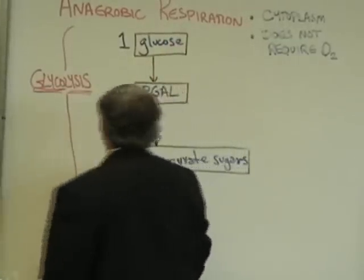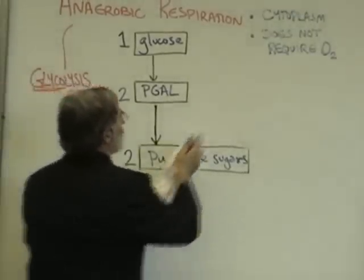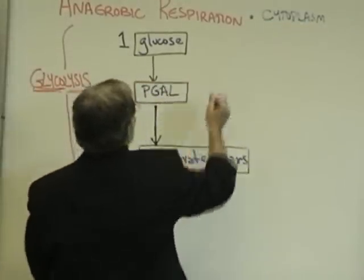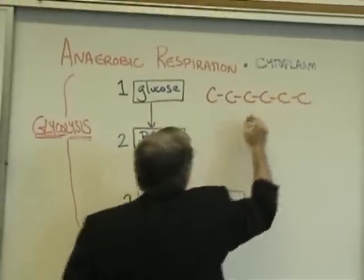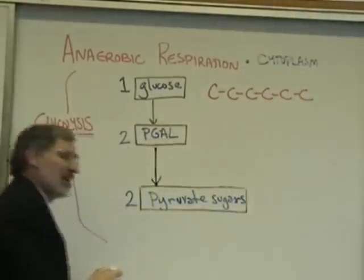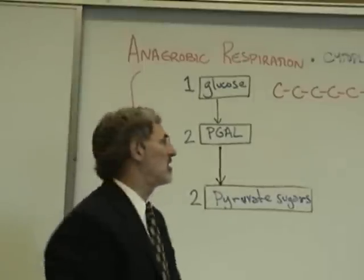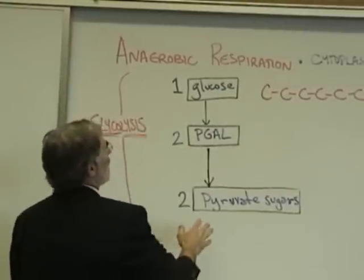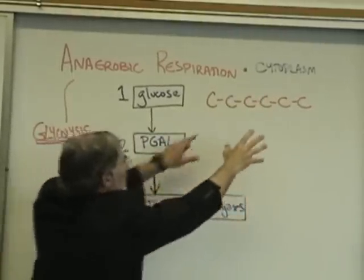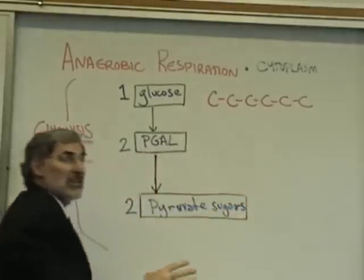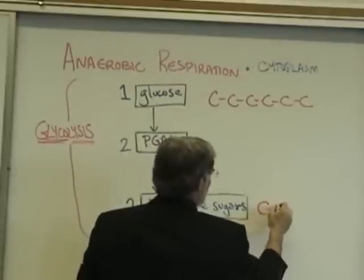We begin with a glucose molecule. To help us understand what's going on, we can represent this glucose molecule by drawing six carbon atoms in a row, since glucose is C6H12O6 — it's six carbon atoms. Basically, glucose is going to be split right in half, forming two sugars that are three carbon atoms each. We call these sugars pyruvate sugars.